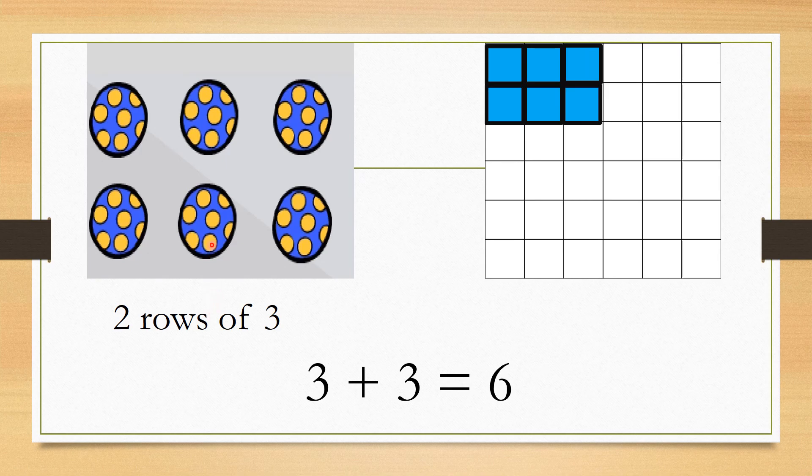Let's take a look at this example. How many rows do I have here? One, two - so I have two rows. And in each row, how many balls do I have? One, two, three. So I will say I have two rows of three.